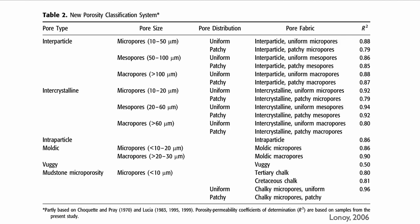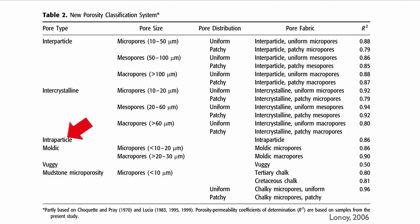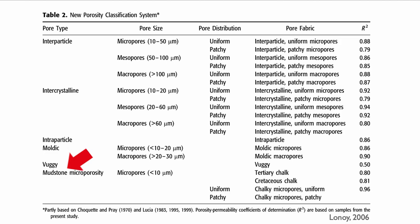He distinguishes different pore types: interparticle, intercrystal, intraparticle, moldic, vuggy, and mudstone microporosity. Except for the microporosity, all of the other terms are effectively the Choquette and Pray classification.